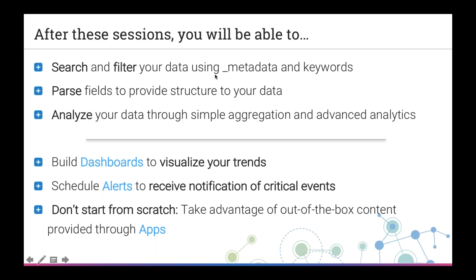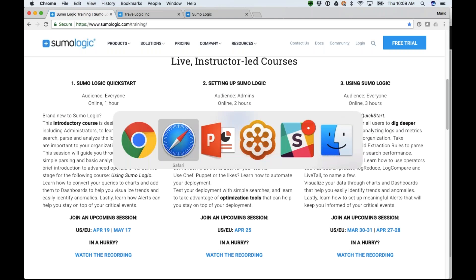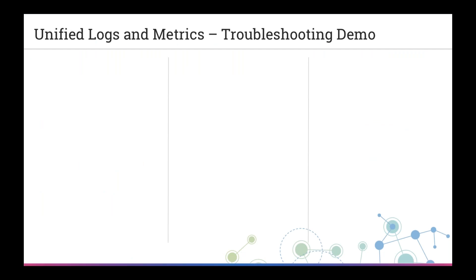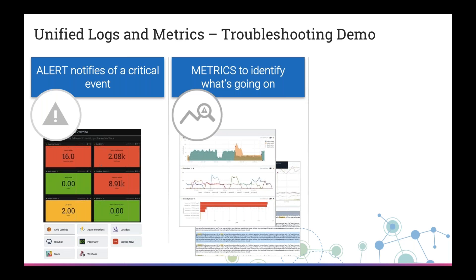I'm going to show you how a customer uses both logs and metrics to troubleshoot their environment. They'll get an alert notifying them of a critical event — in this case, a Webhook sending a message through Slack. That alert drives them into a dashboard showing metrics that help identify what's going on. With this dashboard of metrics I can see that my business is not doing well — in this particular case, people cannot pay, they can't book their flights.